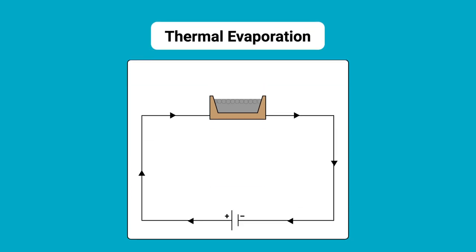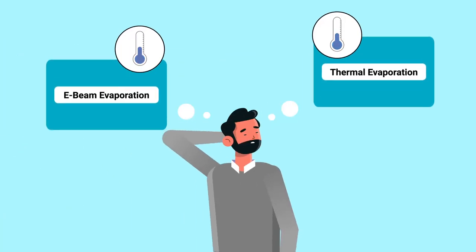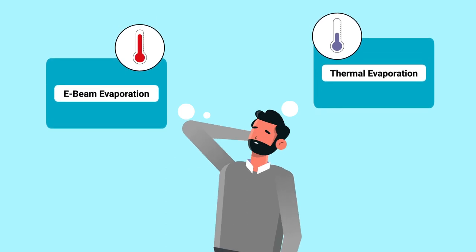Thermal evaporation uses standard resistive heating of an evaporant material by passing a current through it. Because of this, e-beam can heat the material to much higher temperatures due to the practical limits on cable size for standard resistive heating.